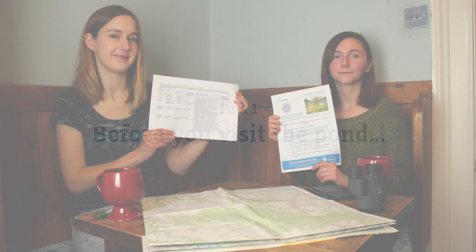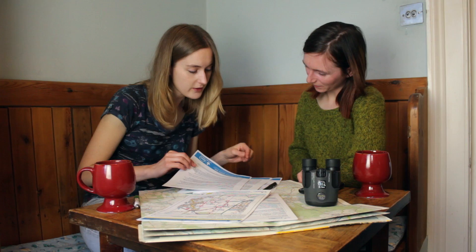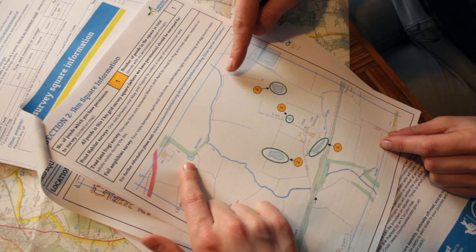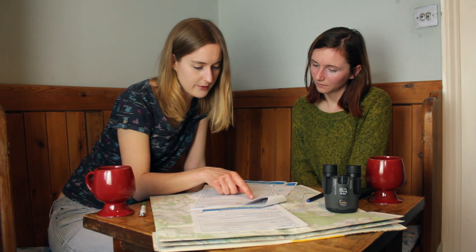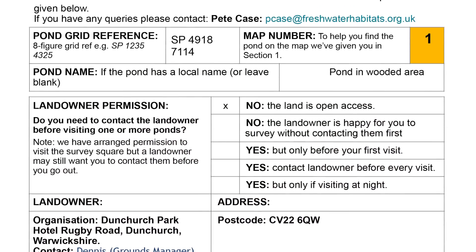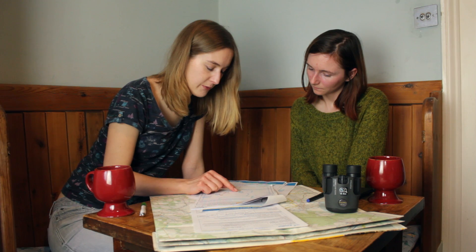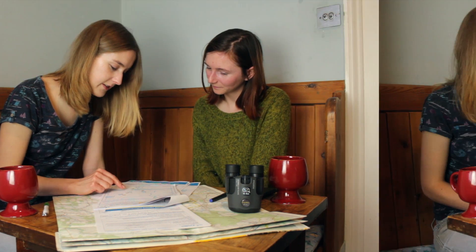Before we visit the pond, let's familiarise ourselves with the survey. In principle, PondNet amphibian surveys are based on a survey of all the ponds in a one kilometre grid square because we're measuring the number of occupied versus unoccupied ponds. If you're surveying one of PondNet's fixed squares, the landowner permission will have been organised for you and details of the ponds to survey will be given in your Site Information Pack. Make sure you read the information in the pack carefully before you go out because you might still need to call the landowner to let them know when you're coming.